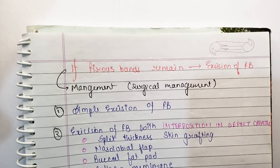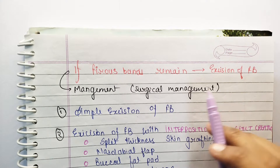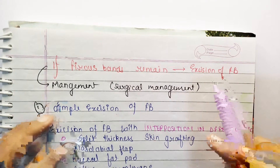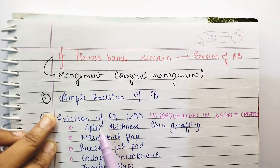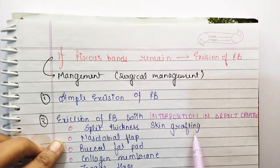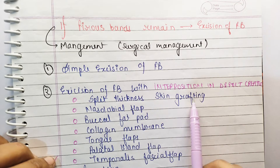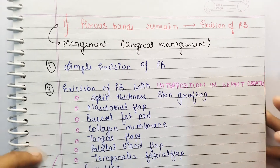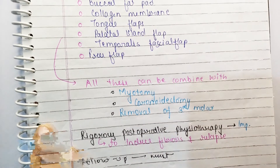If fibrous bands are seen and do not respond to medical therapy after giving all the drugs, you need to go for surgical management — specifically excision of fibrous bands. The steps include: simple excision of fibrous bands, then excision of fibrous bands with interposition in the defect created. For the defect, options include split-thickness skin grafting, nasolabial flap, buccal fat pad, collagen membrane, tongue flap, palatal island flap, and temporalis fascial flap or free flap. These can be combined with myotomy, coronoidectomy, or removal of the third molar. Rigorous post-operative physiotherapy is very important after surgical management.